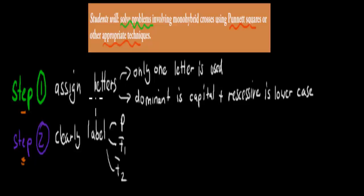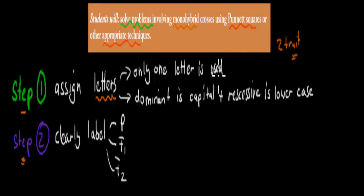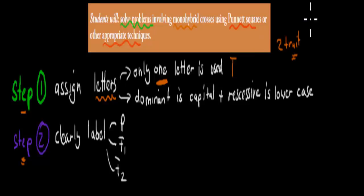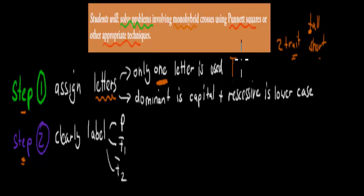First, we're going to assign letters to our actual traits. Remember, because it's a monohybrid cross — which means we're looking at one trait with two versions — we only assign one letter. We assign one a capital and the other the lowercase. For example, if we're looking at height: tall and short. Tall is dominant over short, so we use capital T for tall and lowercase t for short.